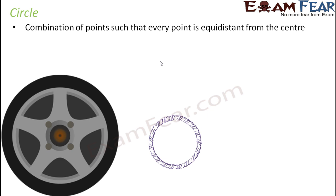Let's start with the circle. A quick recap: what is a circle? It is a combination of points such that every point is equidistant from the center. Take the example of a bangle or a wheel — both are in the shape of a circle. Every point on the bangle is at the same distance from the center, and that is the basic property of a circle. Based on this, we define whether a particular shape is a circle or not.